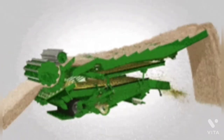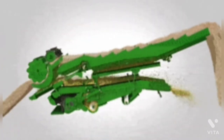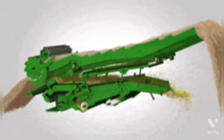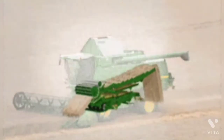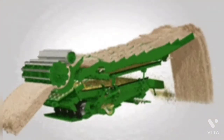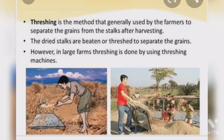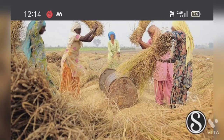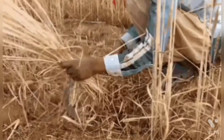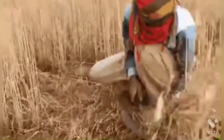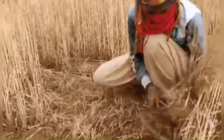After the crop is harvested, the grains are separated from the chaff by a process called threshing. This can be done manually or by a machine called a thresher, used in large farms. Nowadays, a machine called a combine is also used, which performs a dual job — as a harvester for harvesting and as a thresher for threshing.